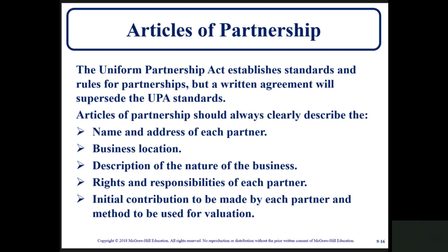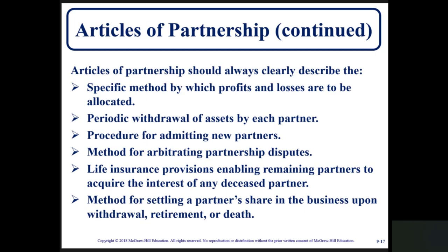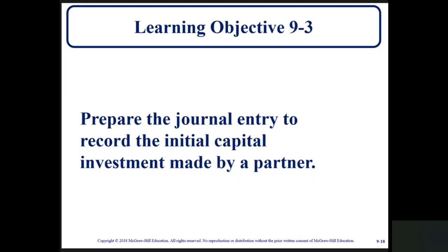Partnerships can exist in the absence of a written partnership agreement, and agreements can have a number of provisions. The Articles of Partnership should also clearly describe the specific method by which profits and losses are to be allocated, periodic withdrawal of assets by each partner, procedure for admitting new partners, method for arbitrating partnership disputes, life insurance provisions enabling remaining partners to acquire the interest of any deceased partner, and a method for settling a partner's share in the business upon withdrawal, retirement, or death.